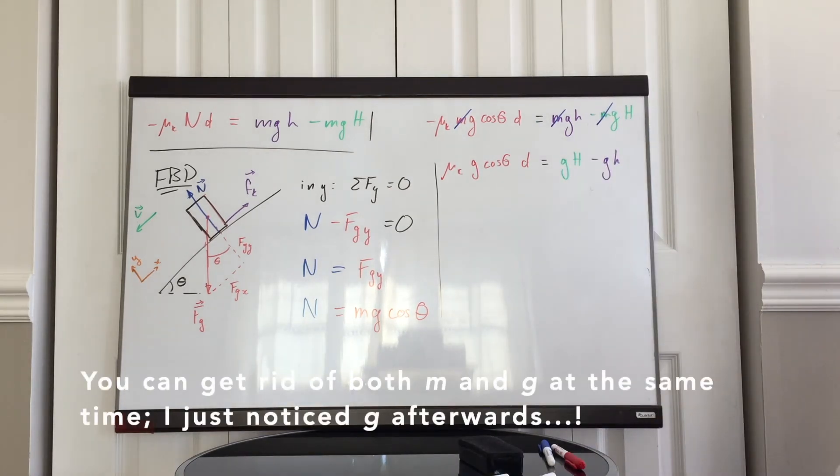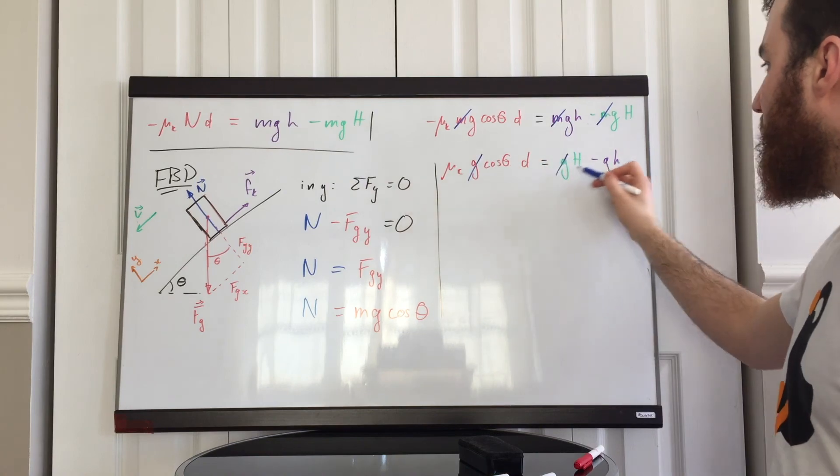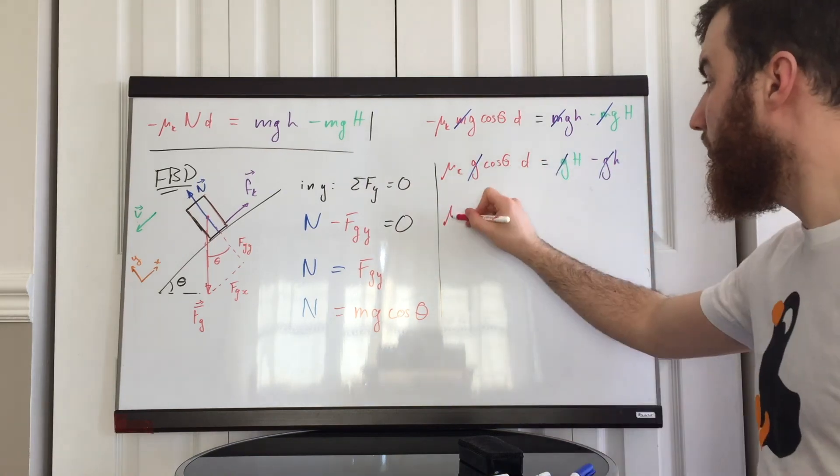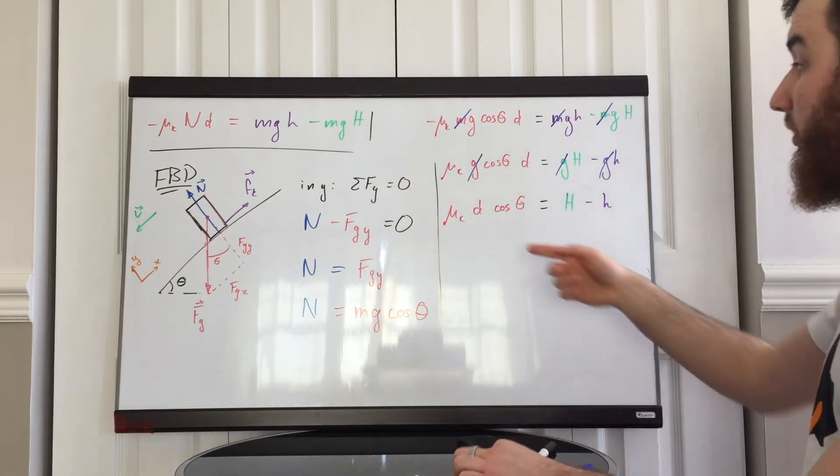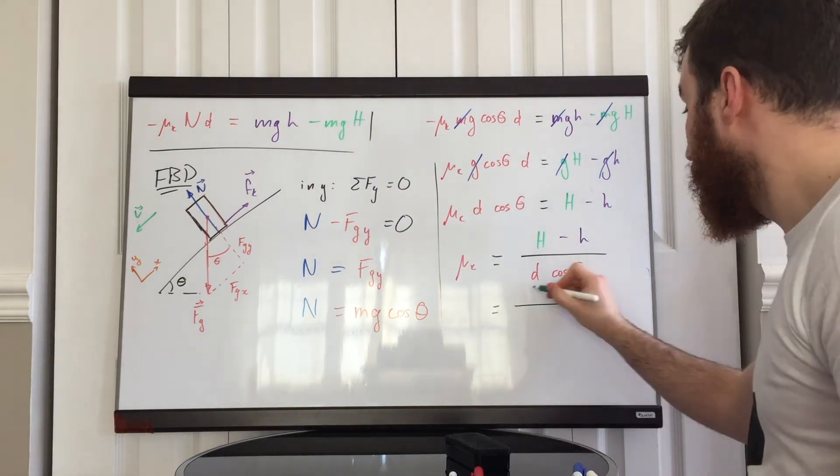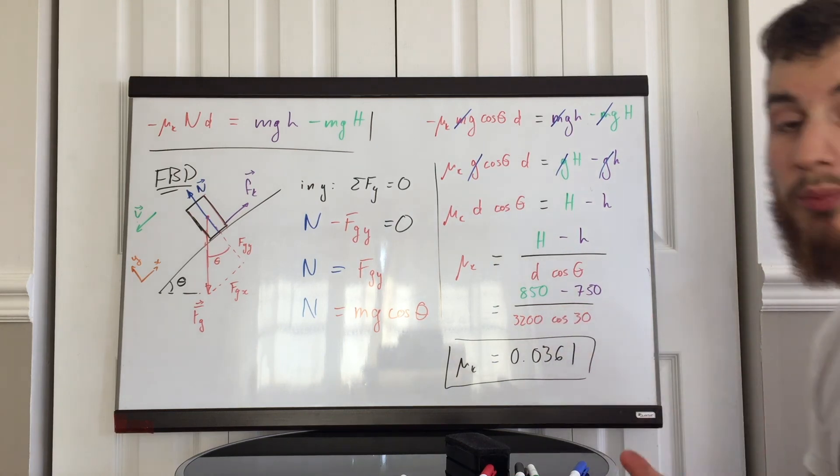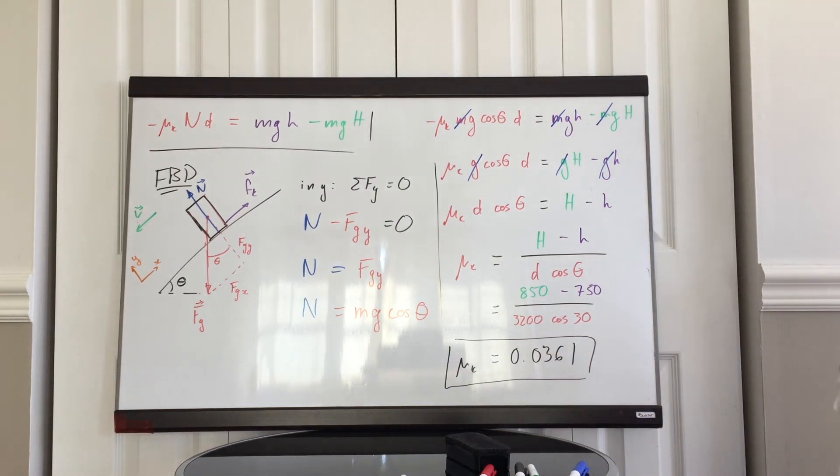The other thing that we notice, I'm just noticing now, is that we can get rid of this g. We don't even need it. We then solve for mu k. And here we have it, mu k is equal to 0.0361. We notice here that I transform d, the distance, 3.2 kilometers into its value in meters. We need the standard SI units for everything to match. And, well, that's it.